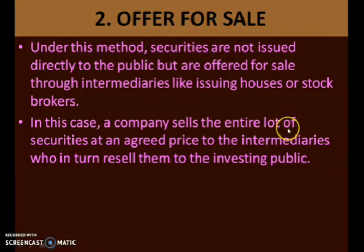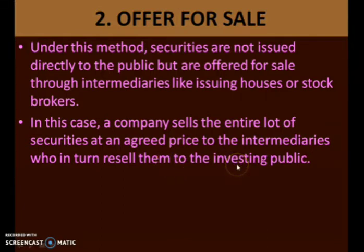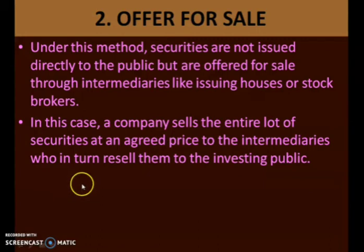In this case, a company sells the entire lot of securities at an agreed price to the intermediaries, who in turn resell them to the investing public. The company sells all the required securities to the intermediaries — the brokers — and the brokers in turn resell those purchased securities to the public who are interested in purchasing shares of the company. The only difference between offer through prospectus and offer for sale is that in offer for sale, an intermediary is involved.